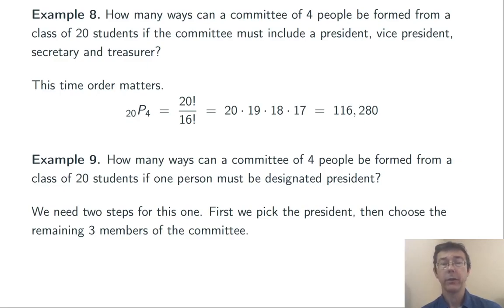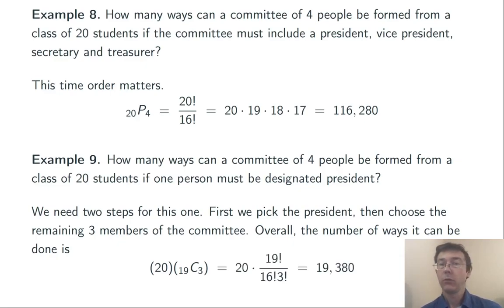Order doesn't matter there. So, it's going to be a choices problem. Overall, it's going to be 20 times 19 choose 3. 19 choose 3 because we've already selected the president. There's only 19 students left. Doing the arithmetic here, 20 times 19 factorial over 16 factorial times 3 factorial. We get 19,380 total possibilities.